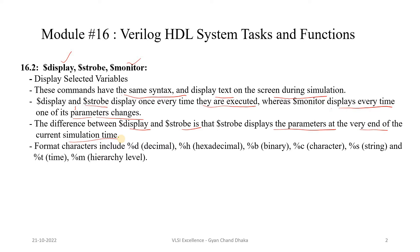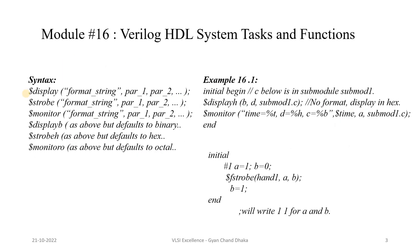The format options available to display variables include decimal, hexadecimal, binary, character, string, time format, and hierarchy level. The syntax for $display requires a format string first, then the variable to be displayed. Similarly, $strobe and $monitor use the same syntax format. $displayb prints variables in binary format by default.